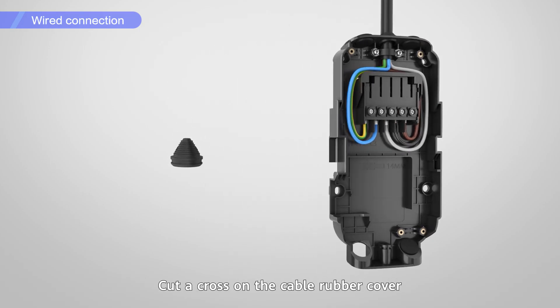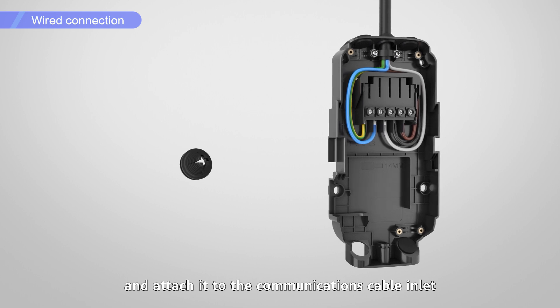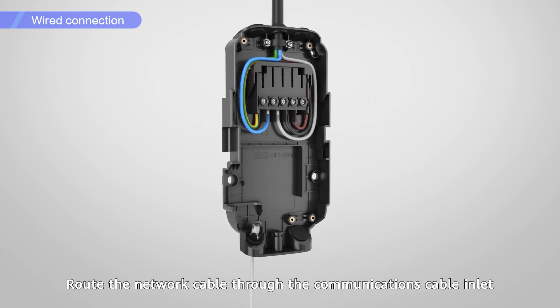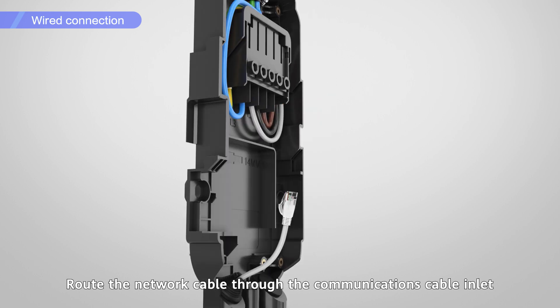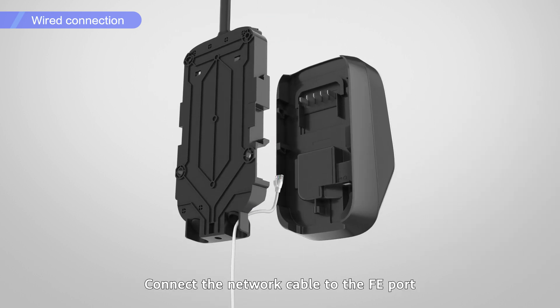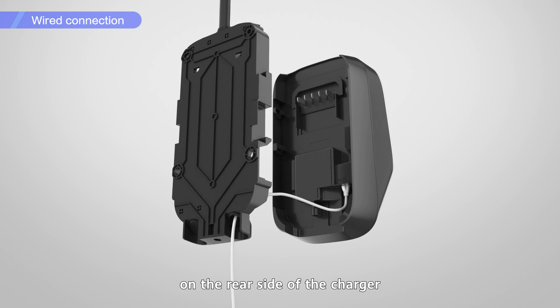Cut a cross on the cable rubber cover and attach it to the communications cable inlet. Route the network cable through the communications cable inlet. Connect the network cable to the FE port on the rear side of the charger.